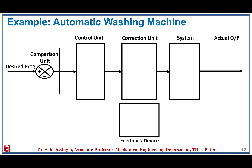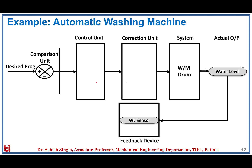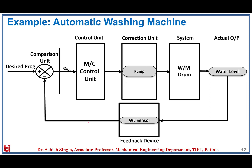The automatic washing machine is a typical closed loop control system containing multiple cycles. The washing machine drum is the system under study. We choose a desired program which sets the desired values of all parameters. The first important parameter is water level — the controller needs to know how much water is present in the drum. This is measured with a water level sensor, and based on the desired program, the machine control unit instructs the pump as the correction unit to raise the water level to the desired value.